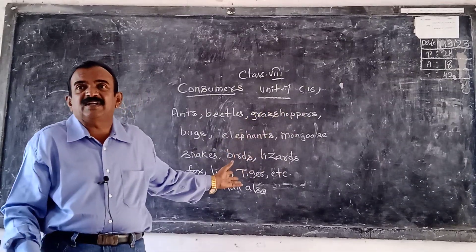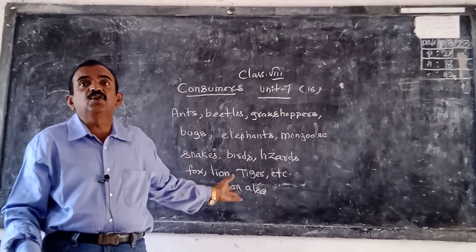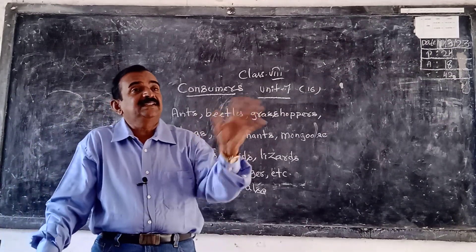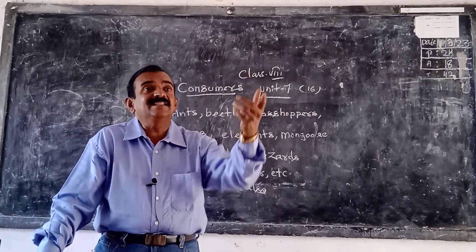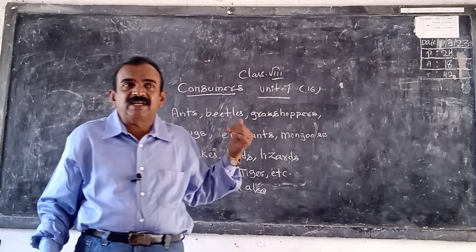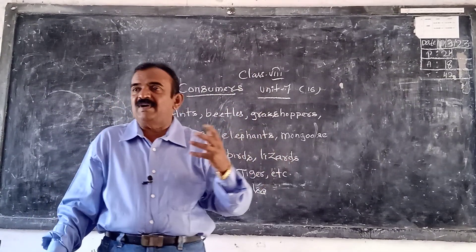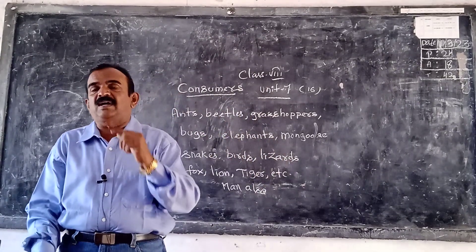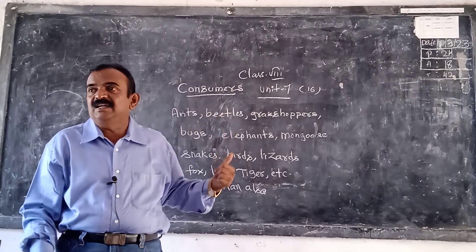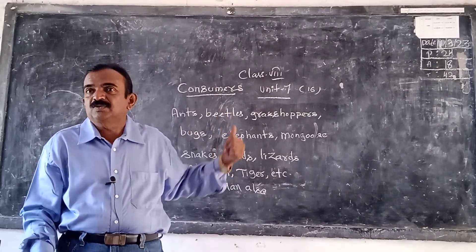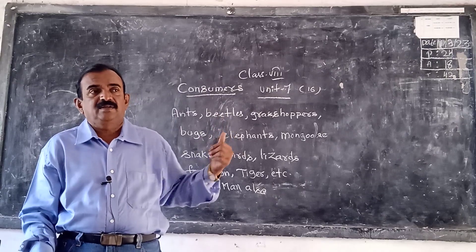So here all of the animals, what are they called? They are called consumers. What are consumers? They are not preparing food. They are eating the food that is prepared by the plant. So they are called consumers.